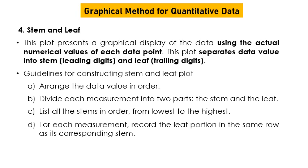A stem and leaf plot presents a graphical display of the data using the actual numerical values of each data point. It separates data values into a stem (leading digits) and a leaf (trailing digit). Guidelines: Step 1 — arrange the data values in order. Step 2 — divide each measurement into stem and leaf parts, list all stems in order from lowest to highest. Step 3 — for each measurement, record the leaf portion in the same row as its corresponding stem.